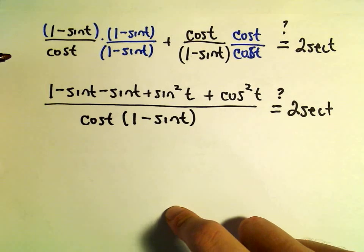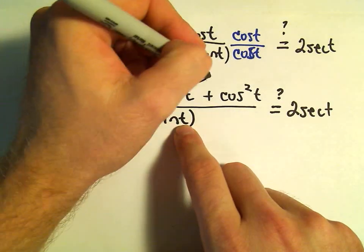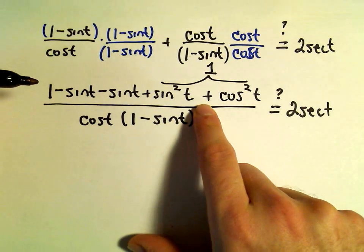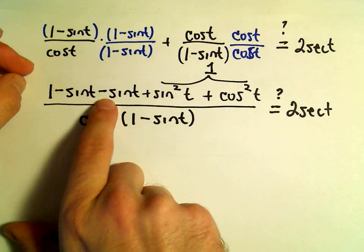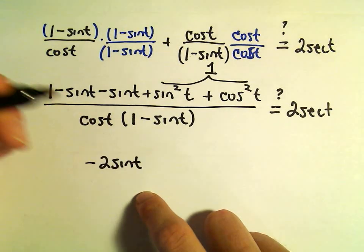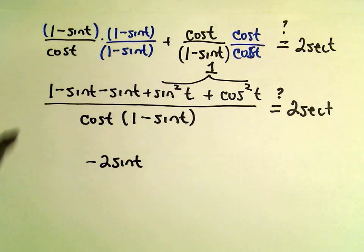Alright, so we can do a couple things here. Notice we've got sine squared plus cosine squared. And sine squared plus cosine squared, remember there's an identity that says that's equal to 1. So really we have negative sine t and negative sine t. That's going to give us negative 2 sine t. We have a positive 1 and by our identity we have another positive 1.